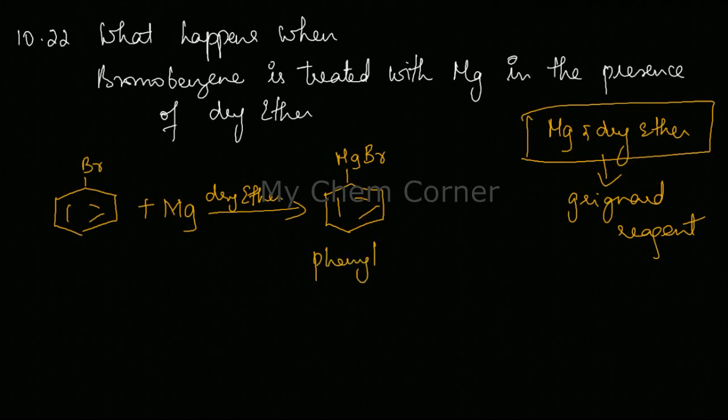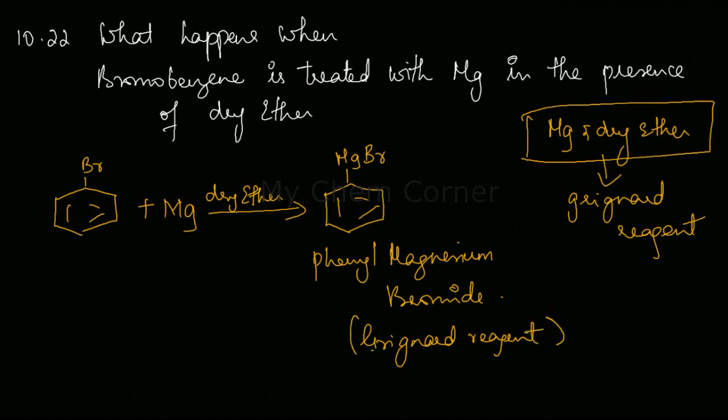You'll form phenyl magnesium bromide, which is a Grignard's reagent. So this is basically the preparation of Grignard's reagent.